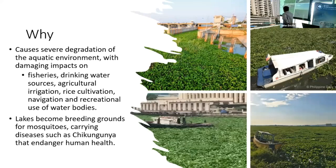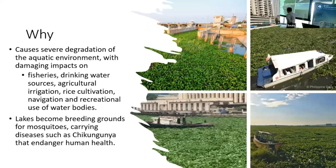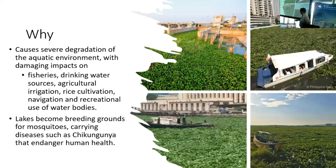As mentioned, it's a major problem across the tropical region. It impacts fisheries, drinking water sources, rice cultivation, navigation, and recreational water bodies. Lakes are also becoming breeding grounds for many diseases, especially mosquitoes, leading to illnesses like chikungunya and endangering human health.